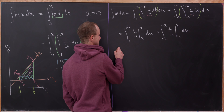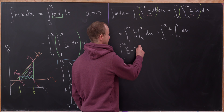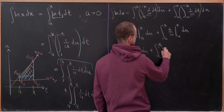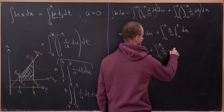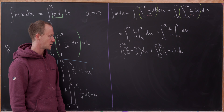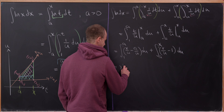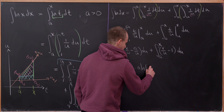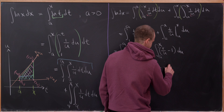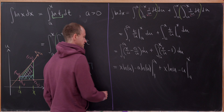Now let's plug in those endpoints. For the first part, we have the integral from 1 to a of x over u minus a over u du. Plus the integral from a to x of x over u minus 1 du. Taking the antiderivative with respect to u gives us x times the natural log of u minus a times the natural log of u, evaluated from 1 to a, plus x times the natural log of u minus u, evaluated from a to x.